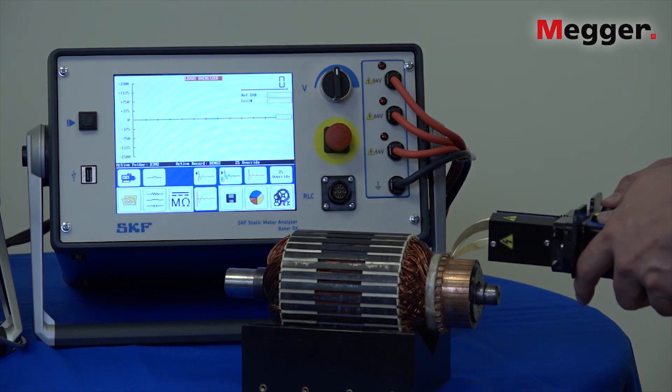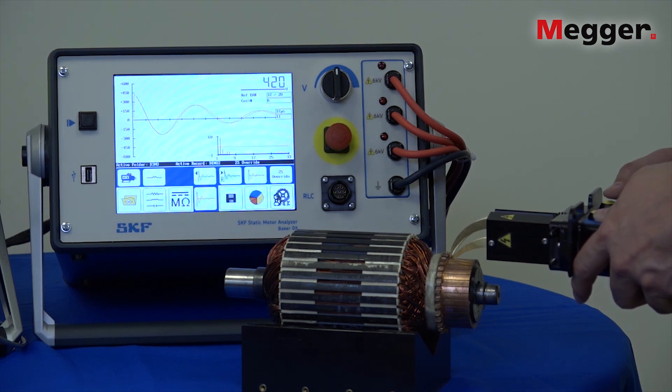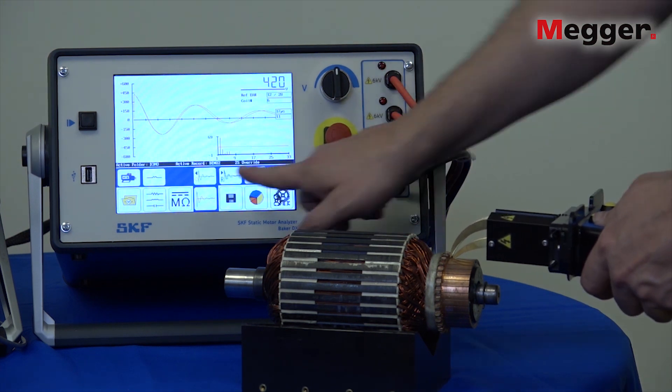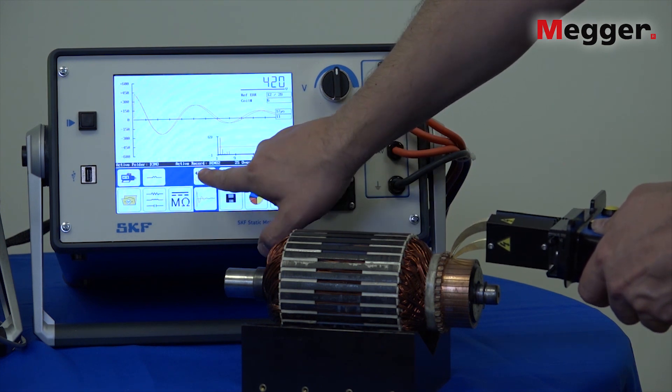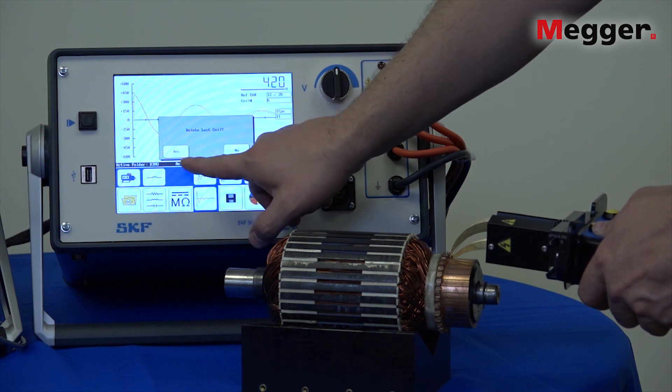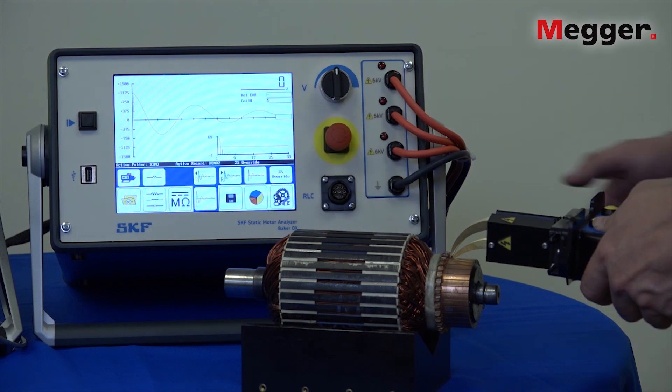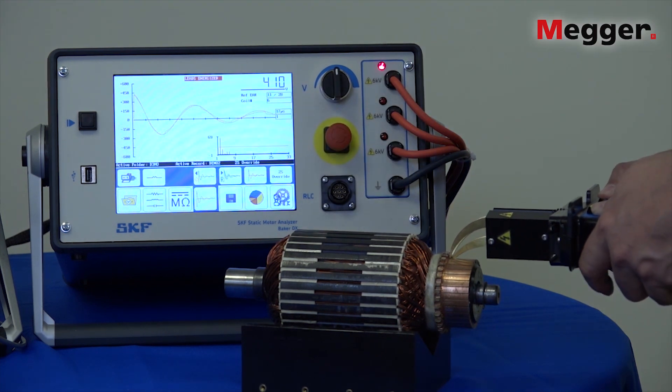I'll do one more capture here. Now if I made a mistake and I need to go back I can select the delete wave and that will delete the last waveform for the last coil test or the last bar to bar test. Click yes and that will change the reference coil back to the last and I can re-perform the test.